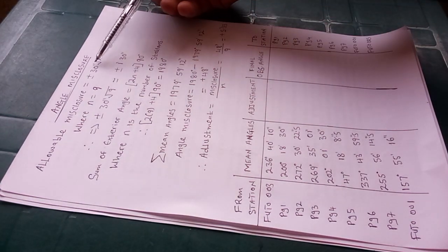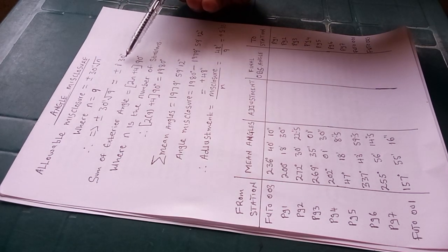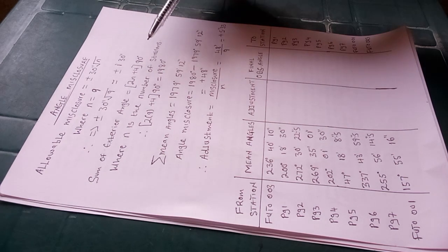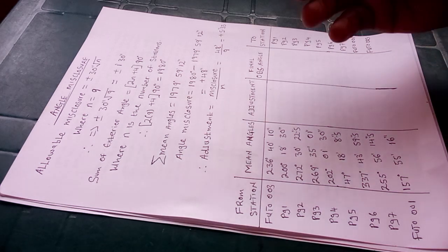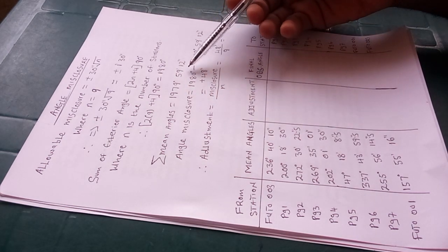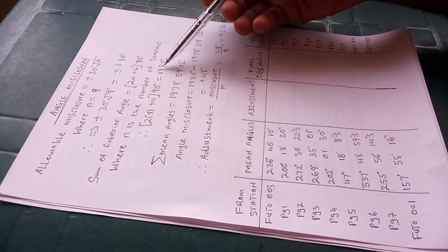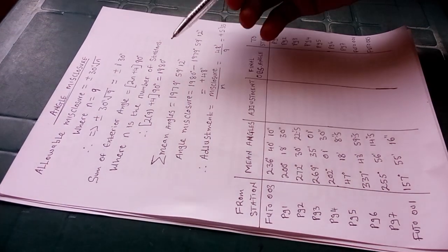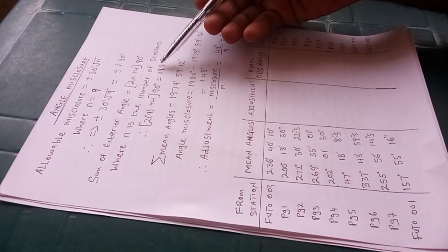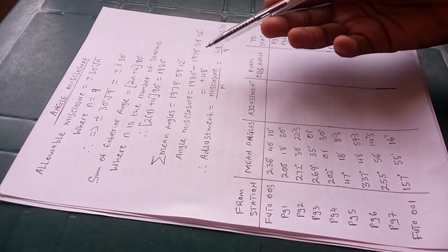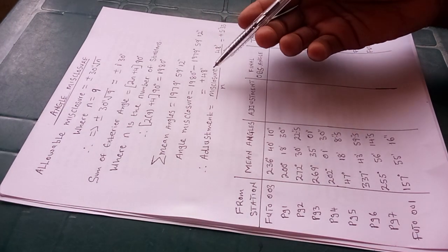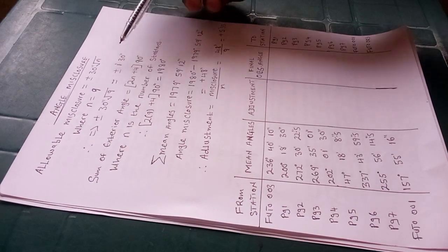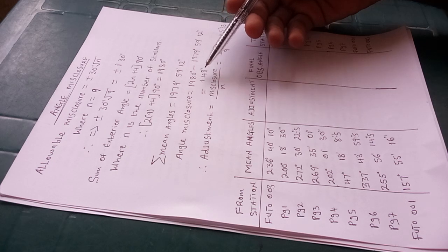Errors are allowable to some limits, and that limit is what we have gauged — the misclosure should not be more than one minute 30 seconds. If it exceeds that, you have to review your fieldwork or go back to site and re-observe. When you sum your mean angles and subtract from the standard of 1980 degrees, you find that you have 48 seconds. This 48 seconds is the angular misclosure — and since it is less than the allowable misclosure, it is acceptable.